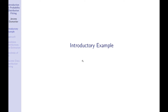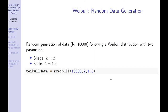To start off, let us do an introductory example. We are going to use the Weibull distribution and randomly generate a thousand observations. In this case, we know the two parameters of the randomly generated data: the shape parameter is going to be set equal to 2, and the scale parameter is set equal to 1.5.